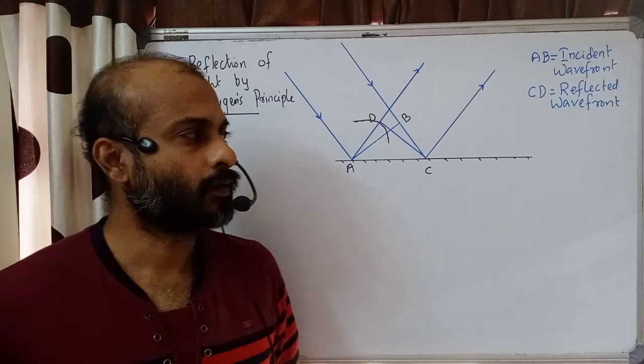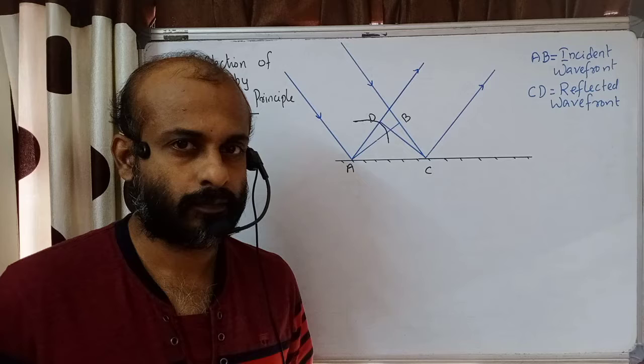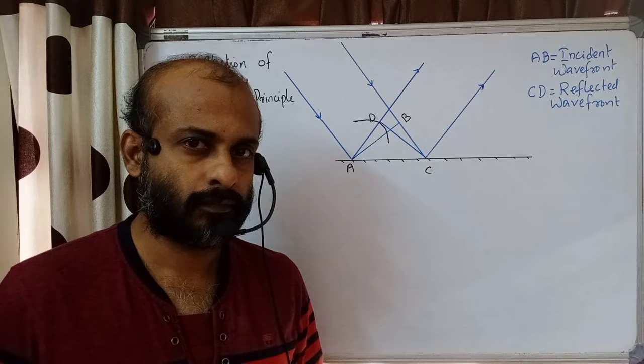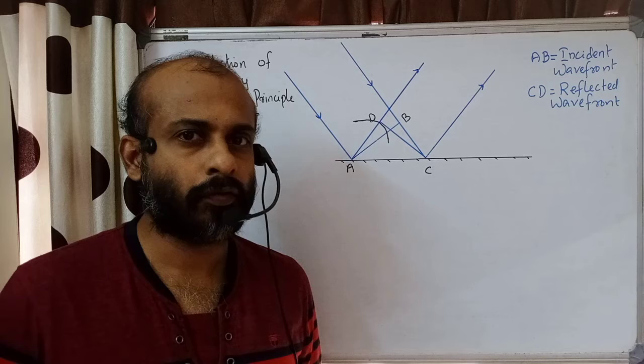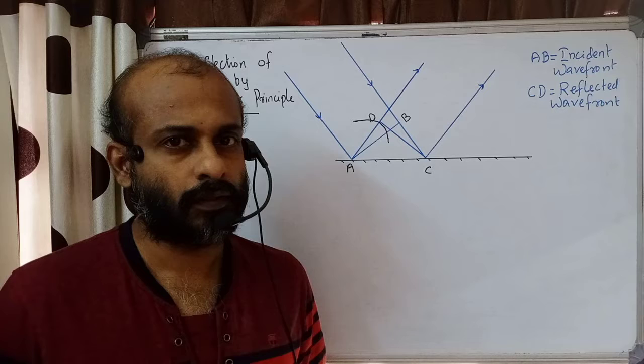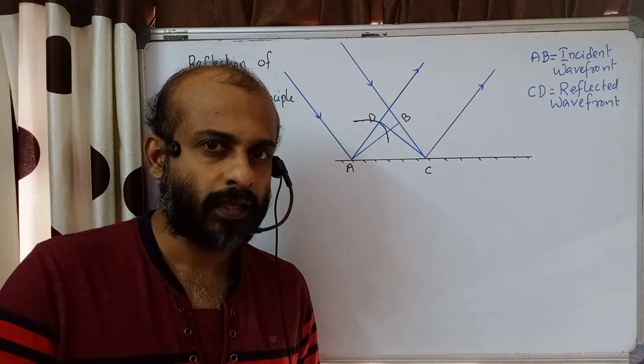In this class we discuss reflection of light by Huygens principle. In the previous class we saw that according to Huygens principle, each point on a wavefront acts as a source of secondary wavelets. With the help of Huygens principle we can get the position and shape of a wavefront at a particular instant of time.